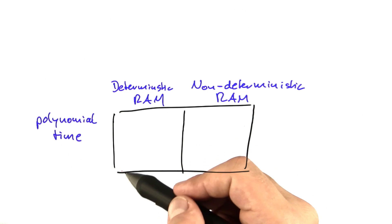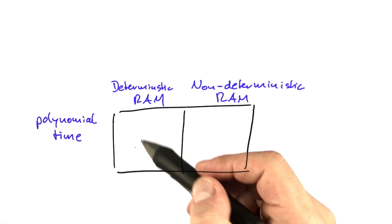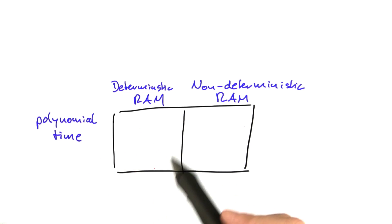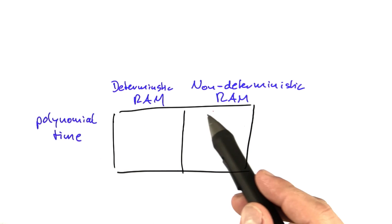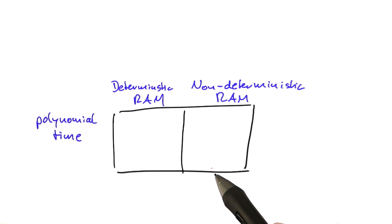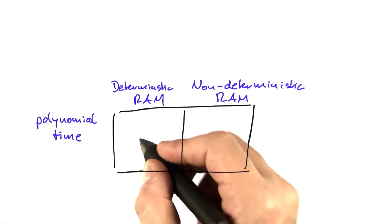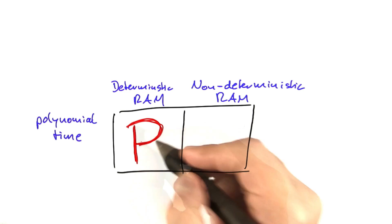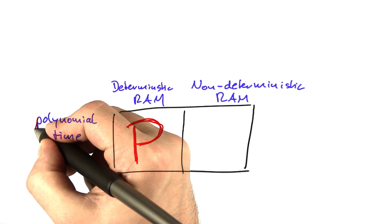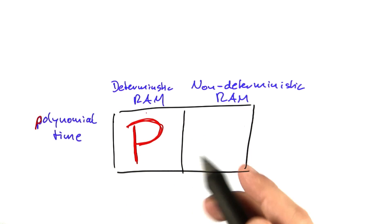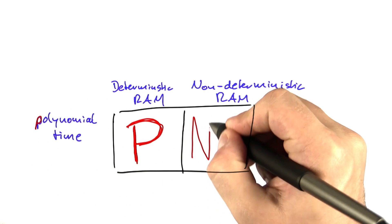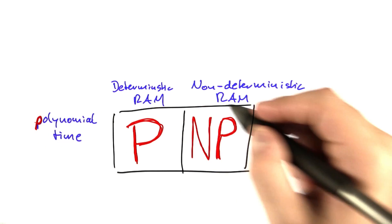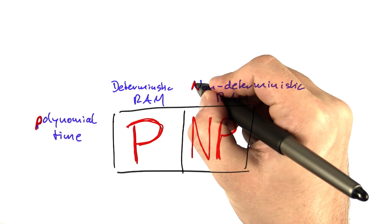Each of these squares contains all of the problems that can be solved in polynomial time — the left one on a deterministic RAM and the right one on a non-deterministic RAM. We'll call this complexity class P, because those are all problems solvable in polynomial time on a deterministic RAM, and we'll call this one NP, because those are all problems solvable in polynomial time on a non-deterministic RAM.